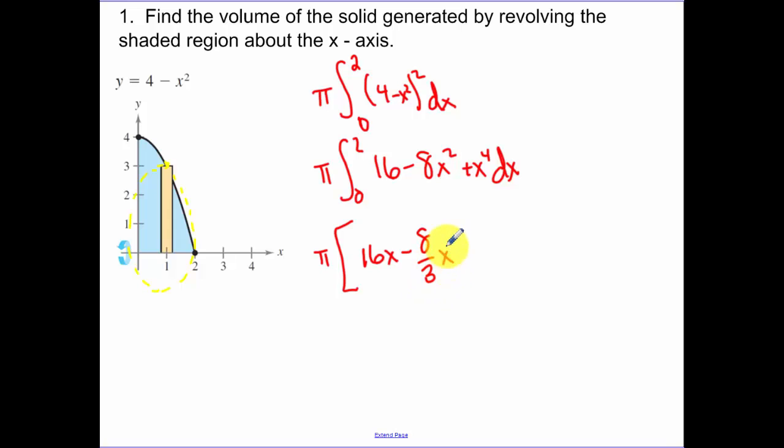And then what we're going to do is we have that formula. When you plug in 2, when you plug in 0, it doesn't matter. When we plug in 2, we get 32 minus 64 thirds plus 32 over 5. And that's going to simplify to 256 pi over 15.